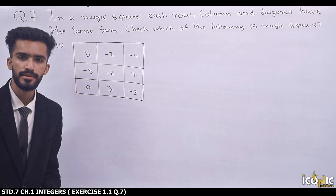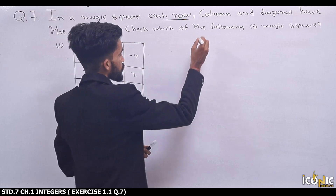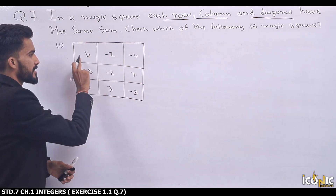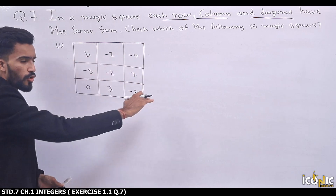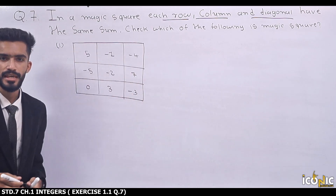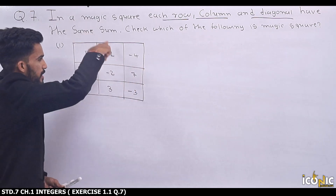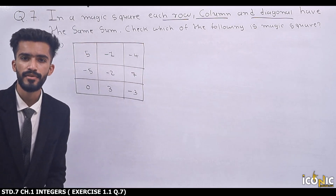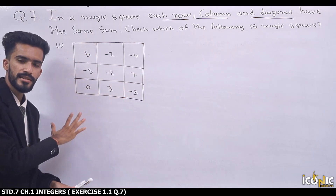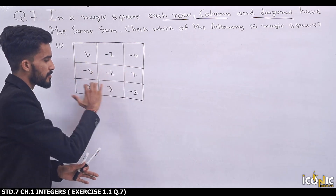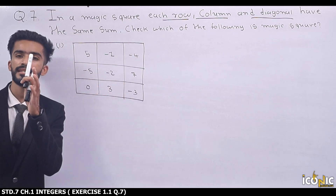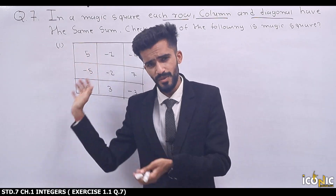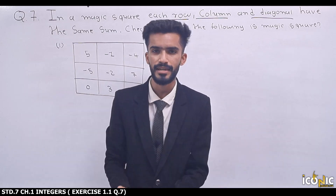Here we have a magic square in which each row, column and diagonal have the same sum. For example, row 5, -1, -4, -5, -2, 7 — add each row, add each column, add each diagonal, the answer should be the same. We need to check which of the following is a magic square. If the answer is the same, then that is the magic square.